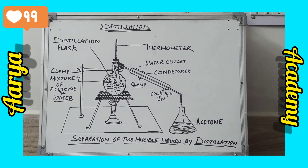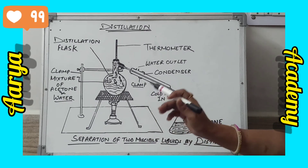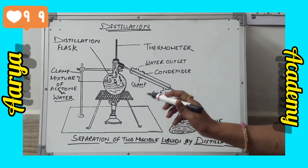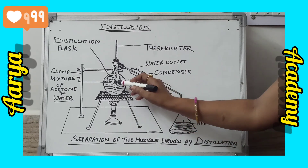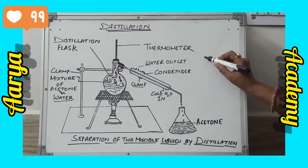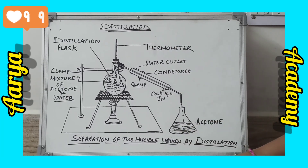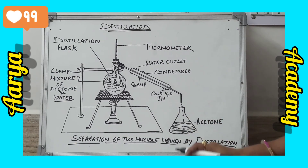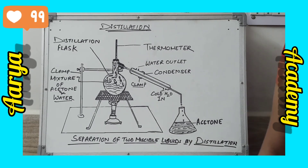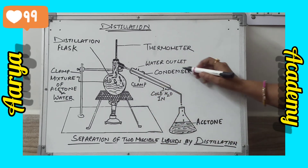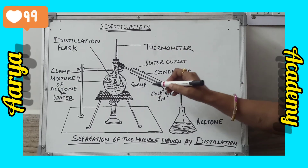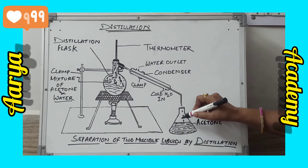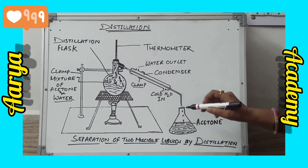Observations: when the mixture of acetone and water is heated in the distillation flask, the vapors of the low-boiling liquid — acetone, which has a boiling point of 56 degrees Celsius or 329 Kelvin — vaporize first. These vapors of acetone pass through the condenser and condense to form liquid acetone. The drops of condensed acetone are collected in the receiver attached to the other end of the condenser.